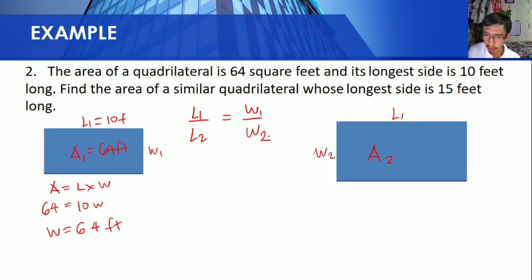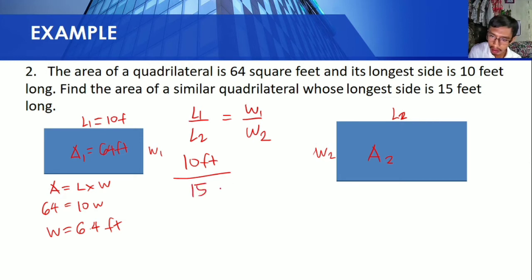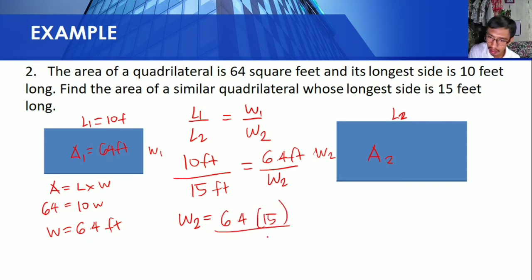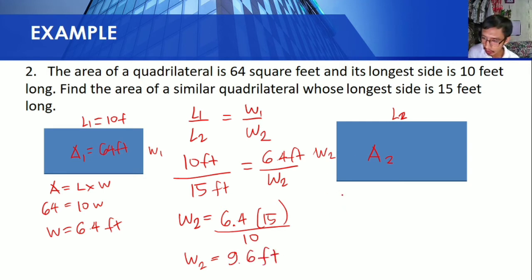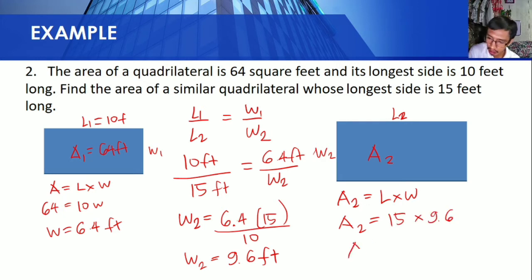Using ratio and proportion: 10 feet over 15 feet is equal to 6.4 feet over W2. Therefore, W2 is equal to 6.4 times 15 over 10, so W2 equals 9.6 feet. Therefore, the area of the second quadrilateral is Area 2 equals length times width equals 15 feet times 9.6 feet. Therefore, Area 2 is equal to 144 square feet.